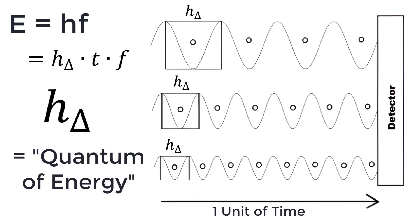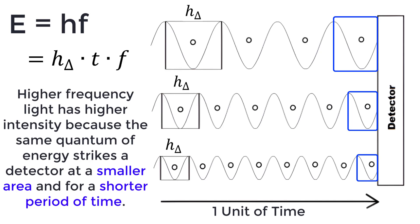And vice versa, lower frequency light has less energy because it contains less quanta of energy per time. Higher frequency light has higher intensity because the same quantum of energy strikes a detector at a smaller area and for a shorter period of time.